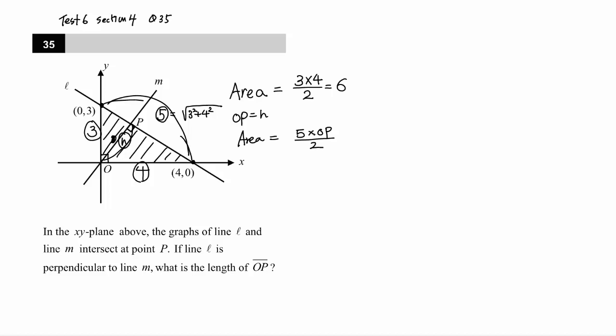So this should equal 6. Therefore, 5 times OP equals 12, so OP is 12 over 5, which equals 2.4. That's the length of OP. Thank you.